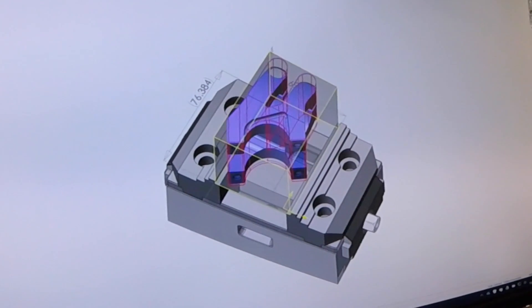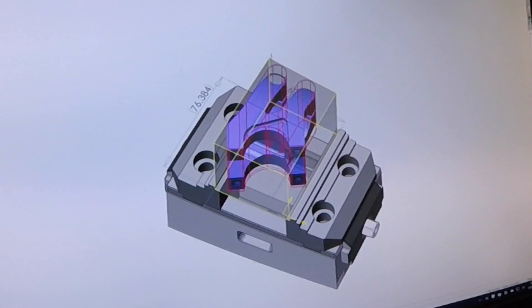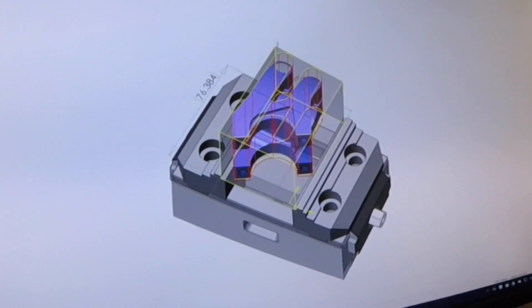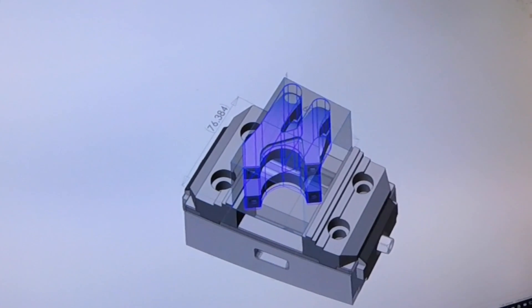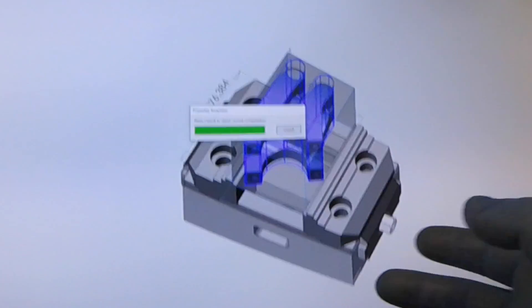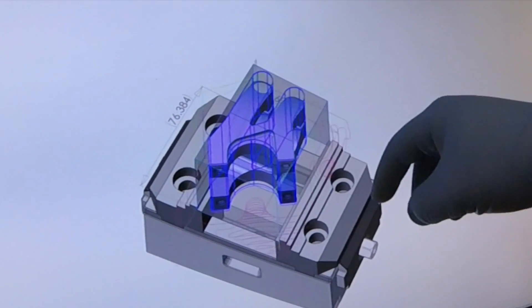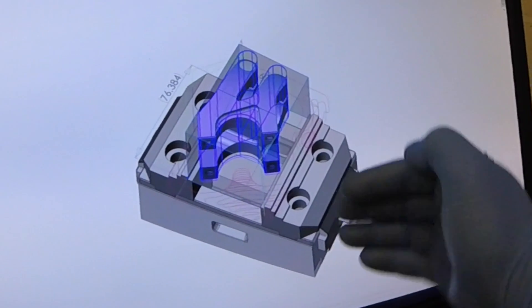So instead we use a new high tech toolpath from Autodesk who make this software. It's called Vortex. So if we preview this toolpath, what this does is it uses a high tech physics engine to calculate the engagement of the tool and limits how much the tool is engaged by.